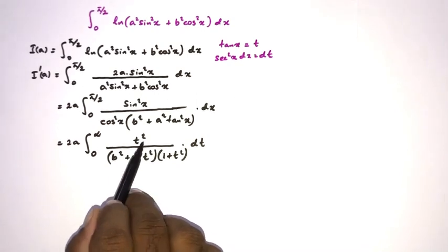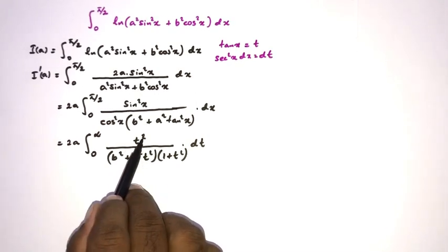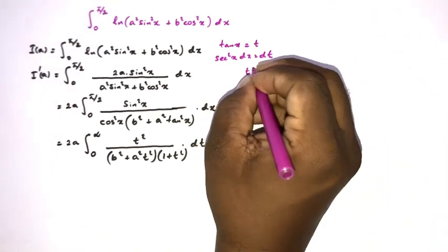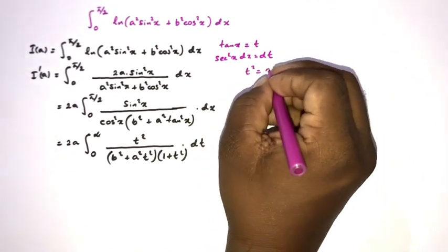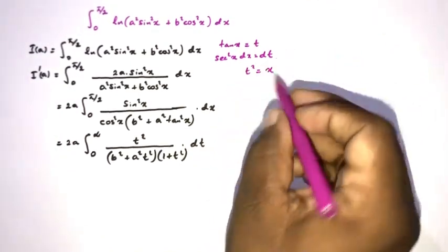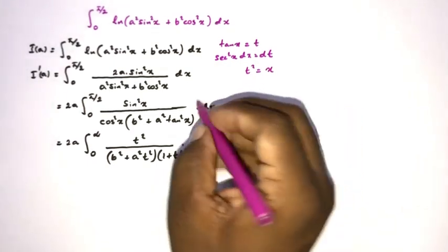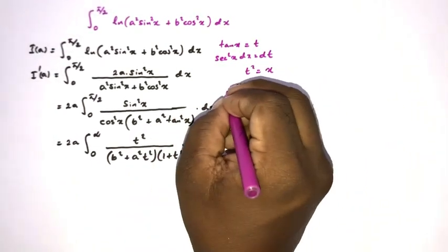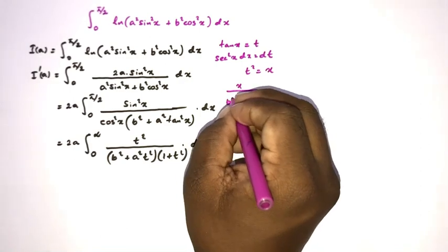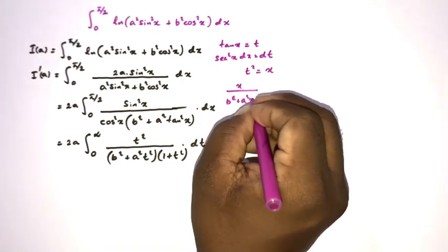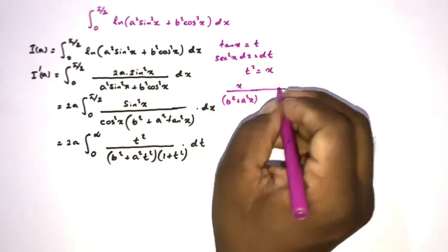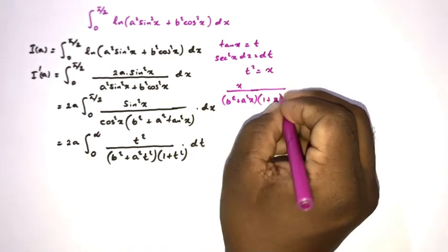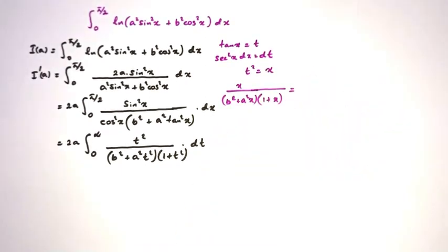For the partial fraction decomposition, since the numerator has even power t², I substitute x = t², rewriting the integrand as x / [(b² + a²x)(1 + x)]. We can now apply the cover method to decompose this rational function.